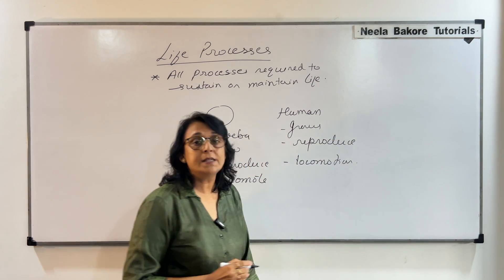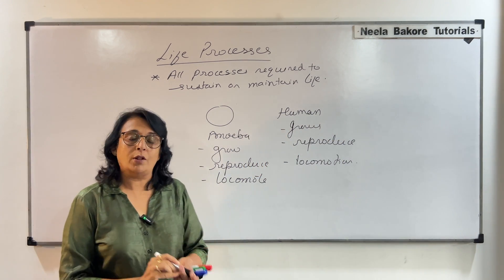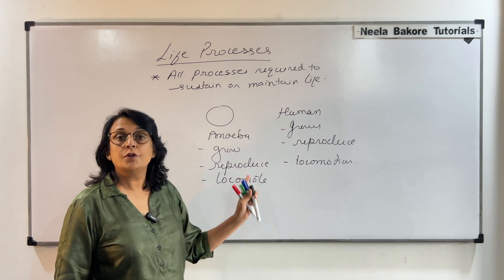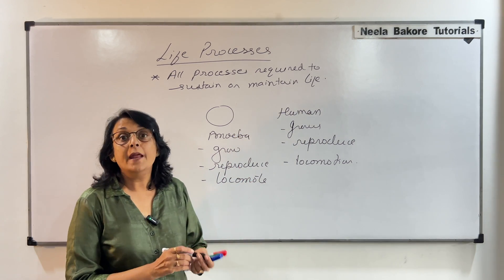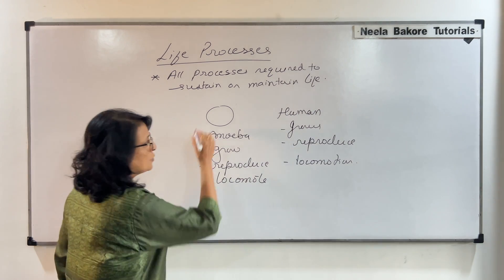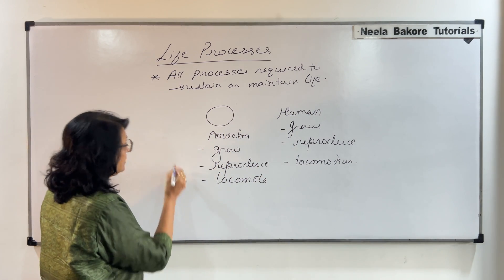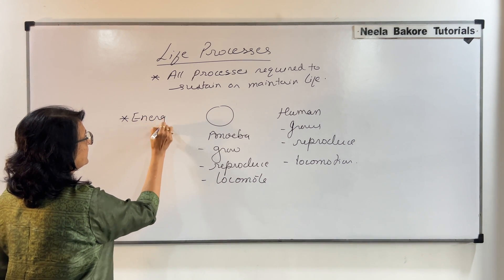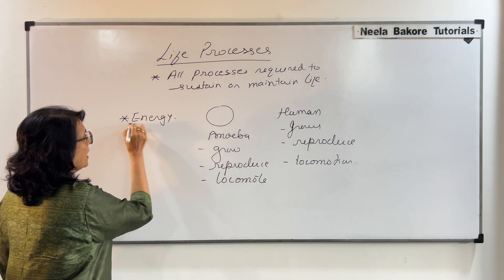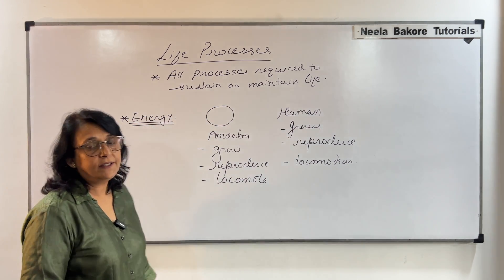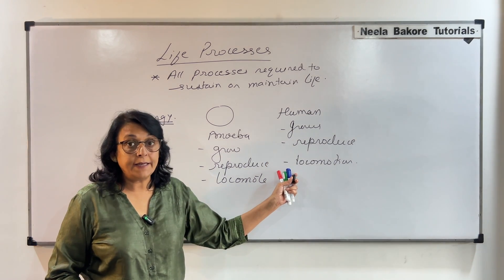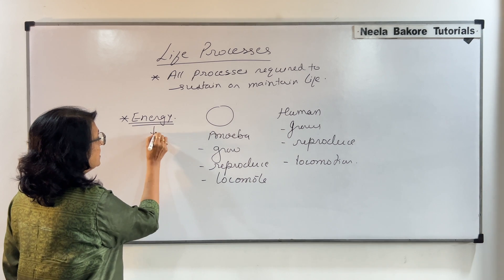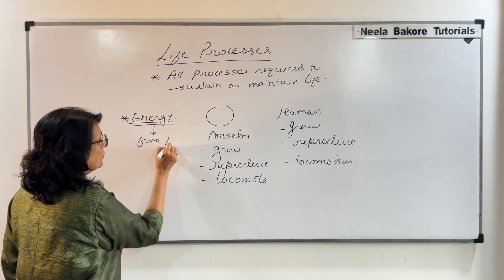Now how are these organisms able to do all these things? For growth, for reproduction, for locomotion, energy is required. So for all these processes, what is needed is energy. How would amoeba get energy? How would a human get energy? We get energy from food — energy is obtained from food.